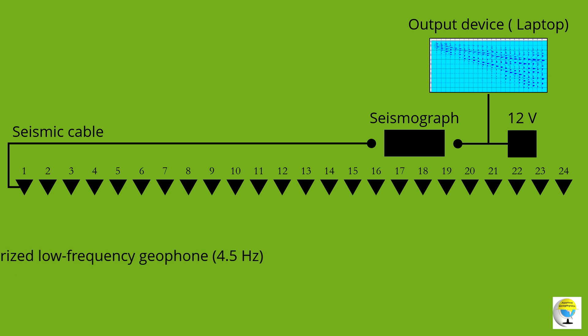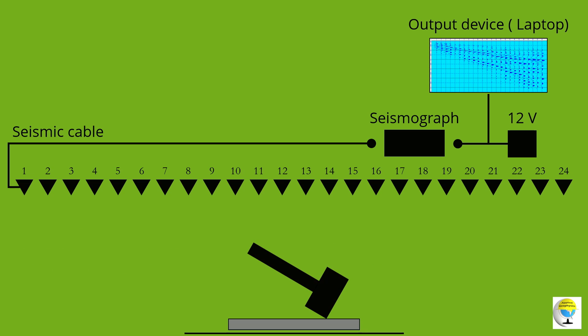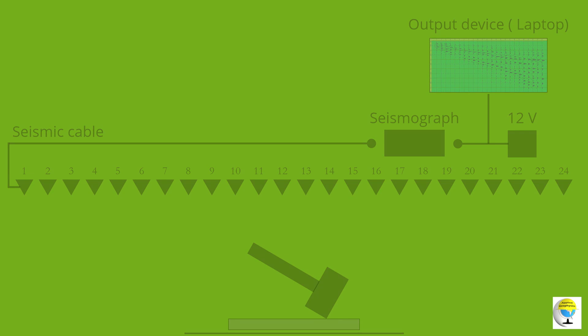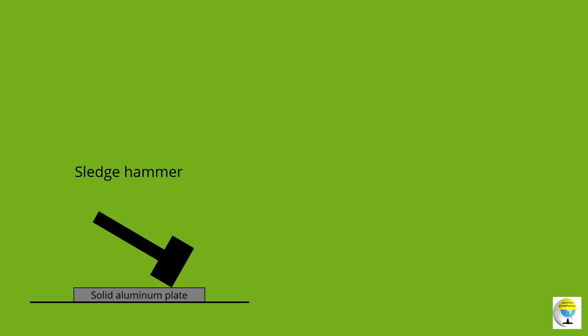For a seismic source, a sledgehammer is most commonly used to create an impact on the ground. A solid aluminum plate is typically used as a coupling device against which the hammer impact is applied.